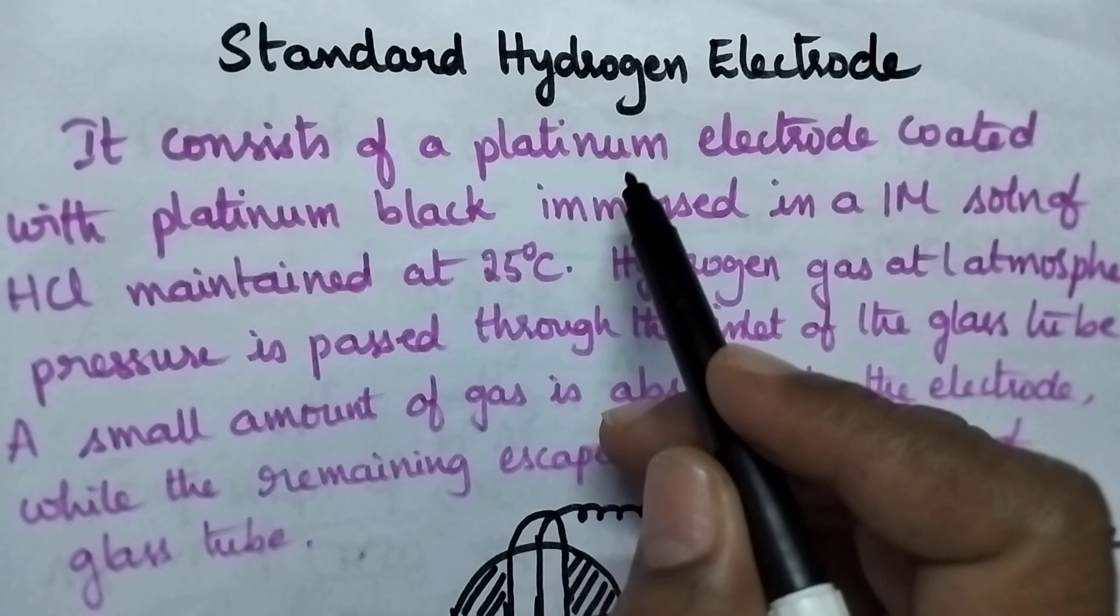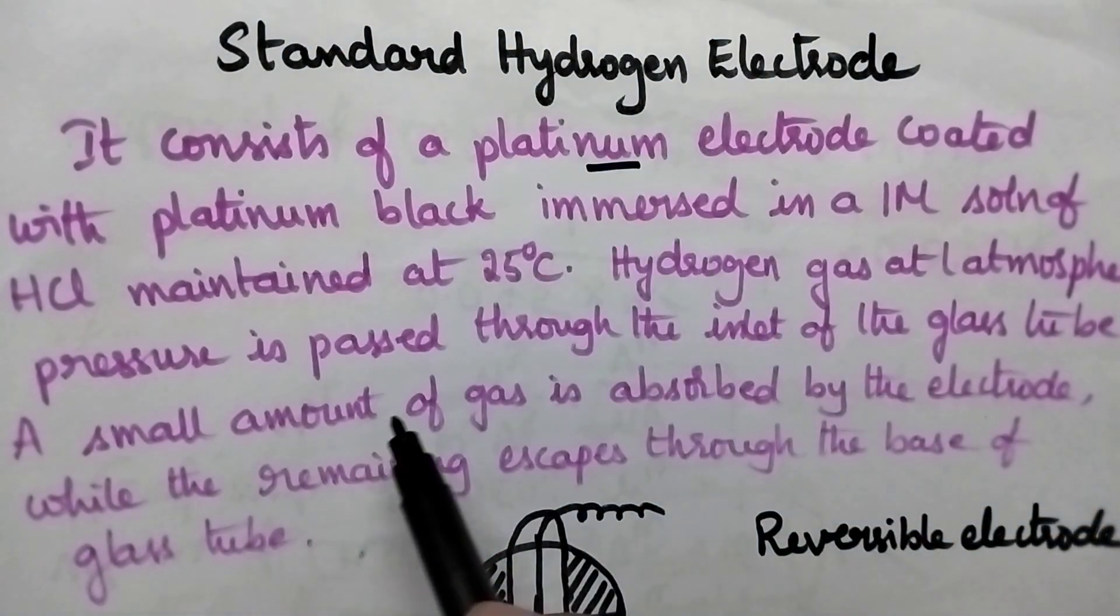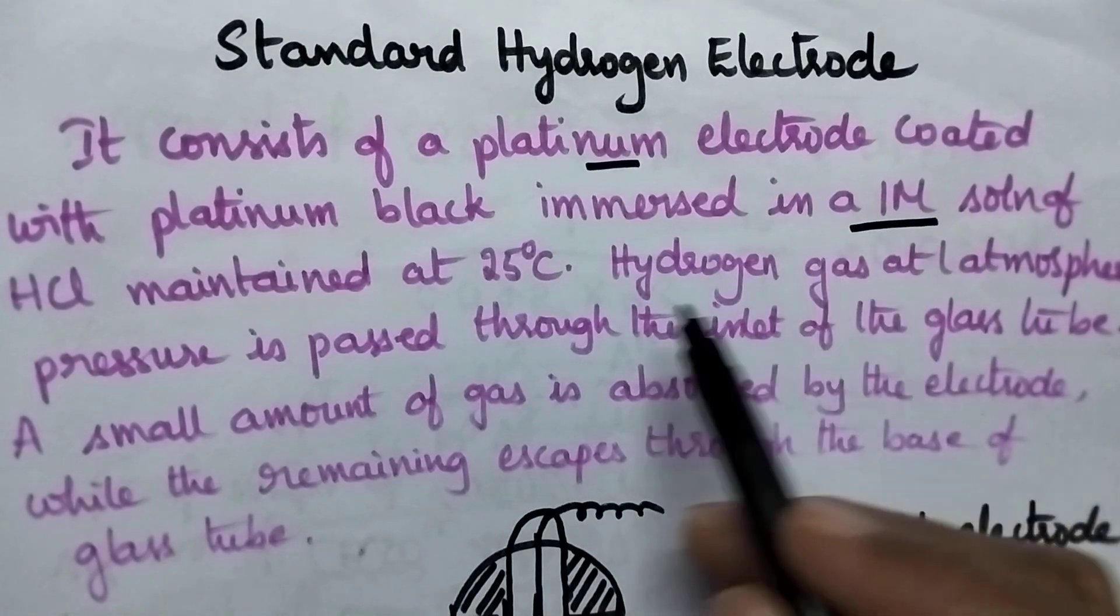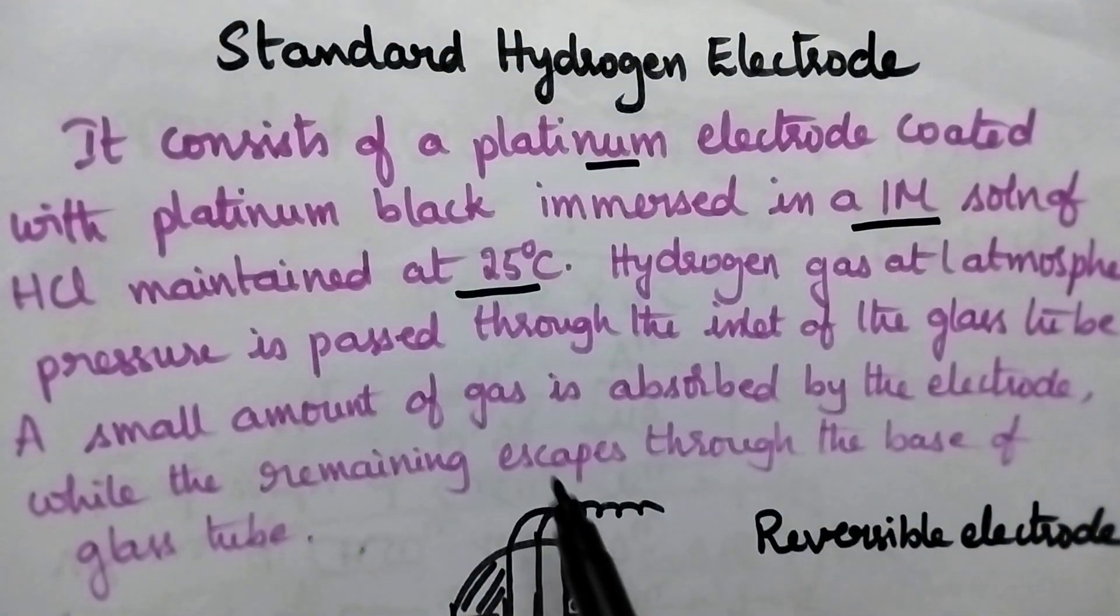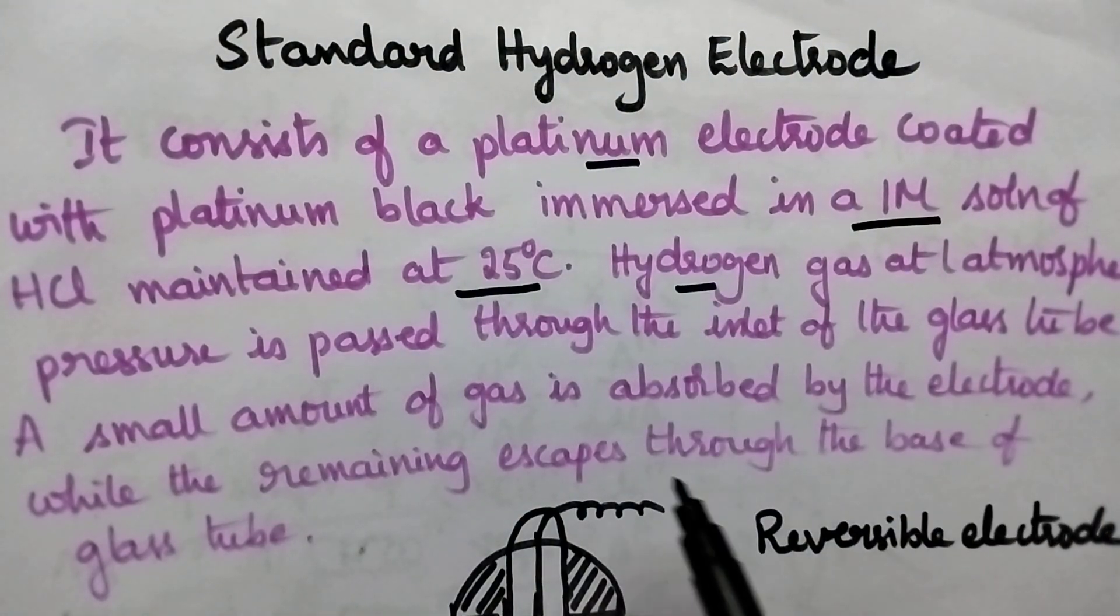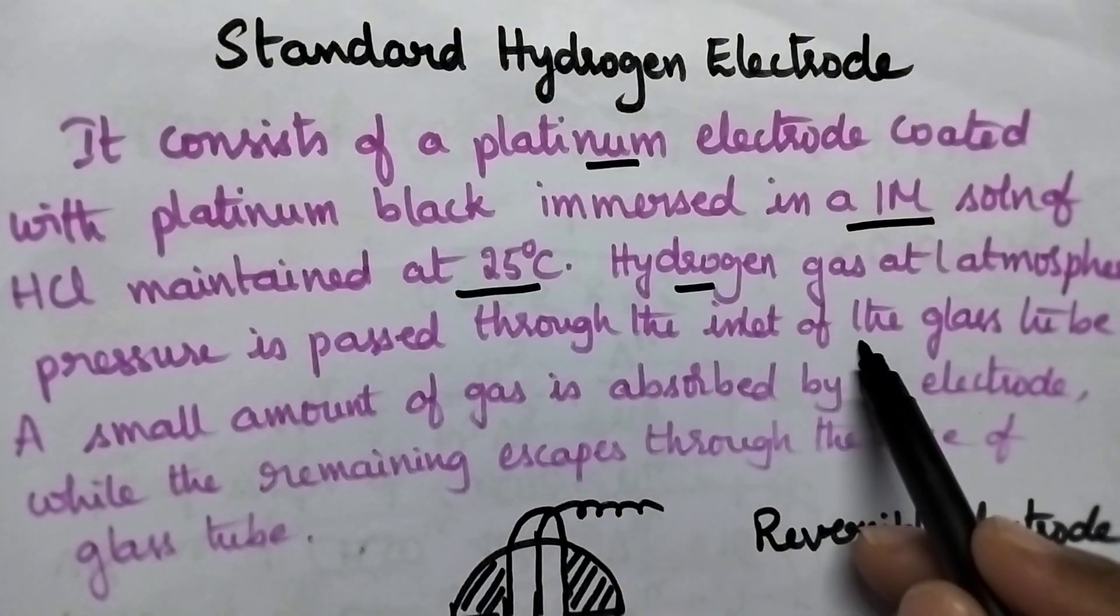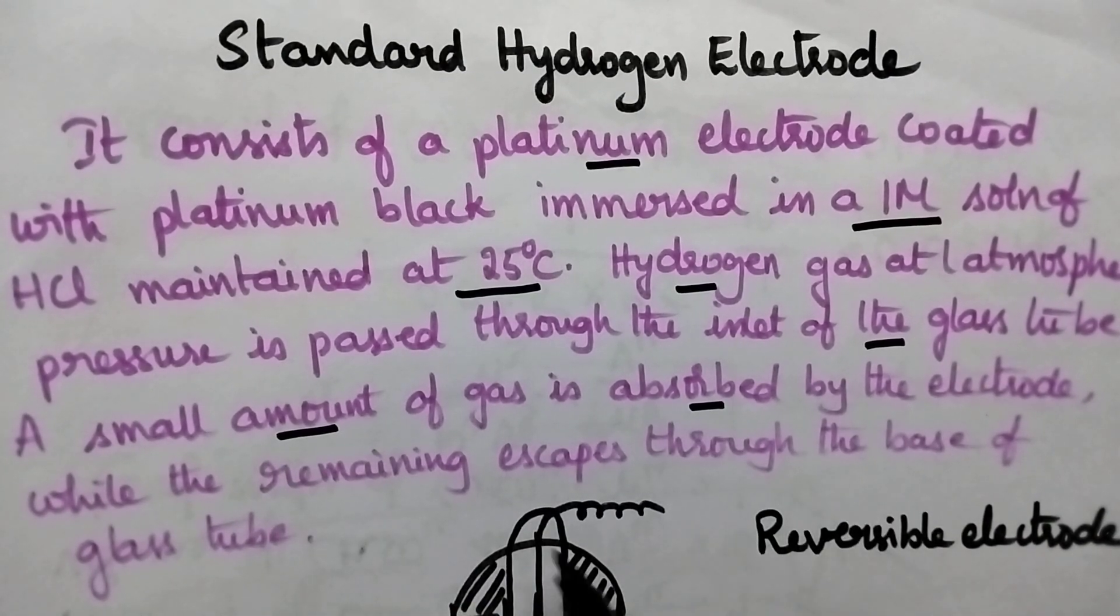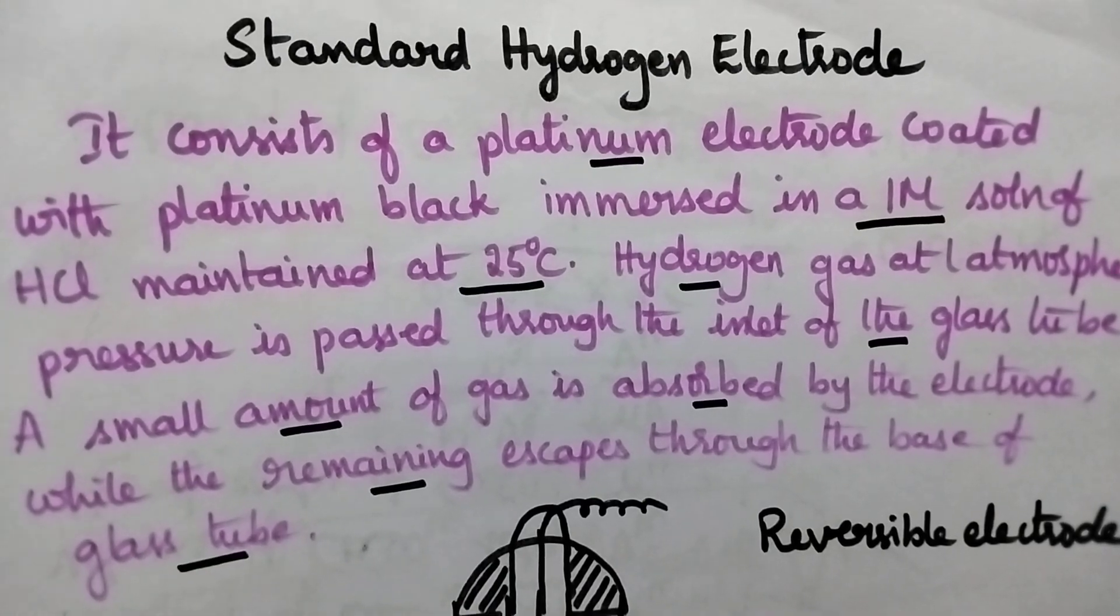In general, it consists of a platinum electrode which is coated with platinum black and immersed in HCl solution having 1 molar concentration at 25 degrees Celsius. Whenever hydrogen gas at 1 atmosphere is passed through the glass tube, a small amount of the gas is absorbed by the electrode and the remaining gas escapes from the base of the glass tube.